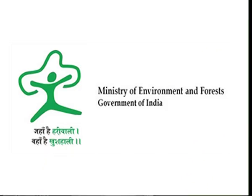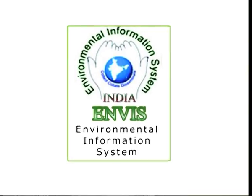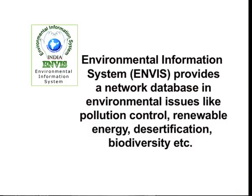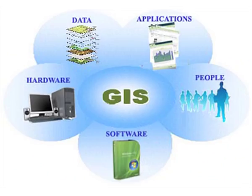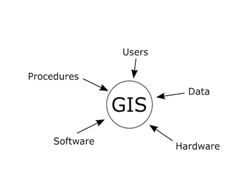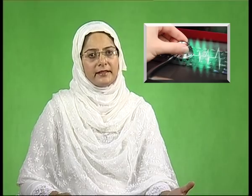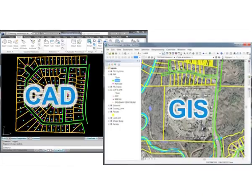The Ministry of Environment and Forests, Government of India, has created an information system called the Environmental Information System, providing a network database on environmental issues like pollution control, renewable energy, desertification, biodiversity and many other things. A geographic information system is a system designed to capture, store, manipulate, analyze, manage and present all types of geographical data. Modern GIS technologies use digital information for which various digitized data creation methods are used. The most common method of data creation is digitization, where a hard copy map or survey plan is transferred into a digital medium through the use of a CAD program and geo-referencing capabilities.